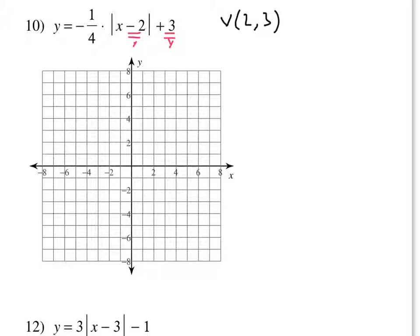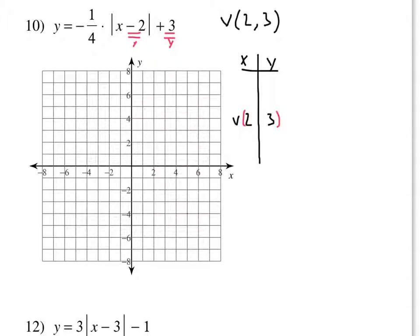I'm going to talk about plotting points first — remember, there's two methods. Plotting points will work for you. If you decided to plot points, I know that some people like that method better. What you need to do is center your points around the vertex. We need to make sure that is the center of where we're checking so that we can see both sides of the V.